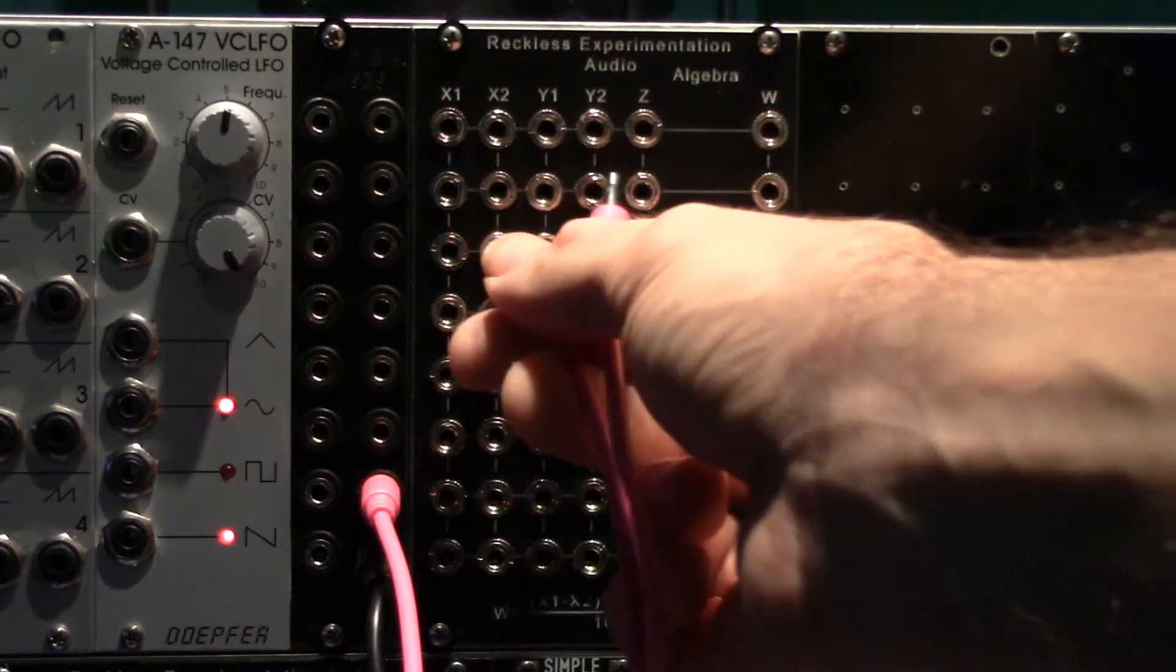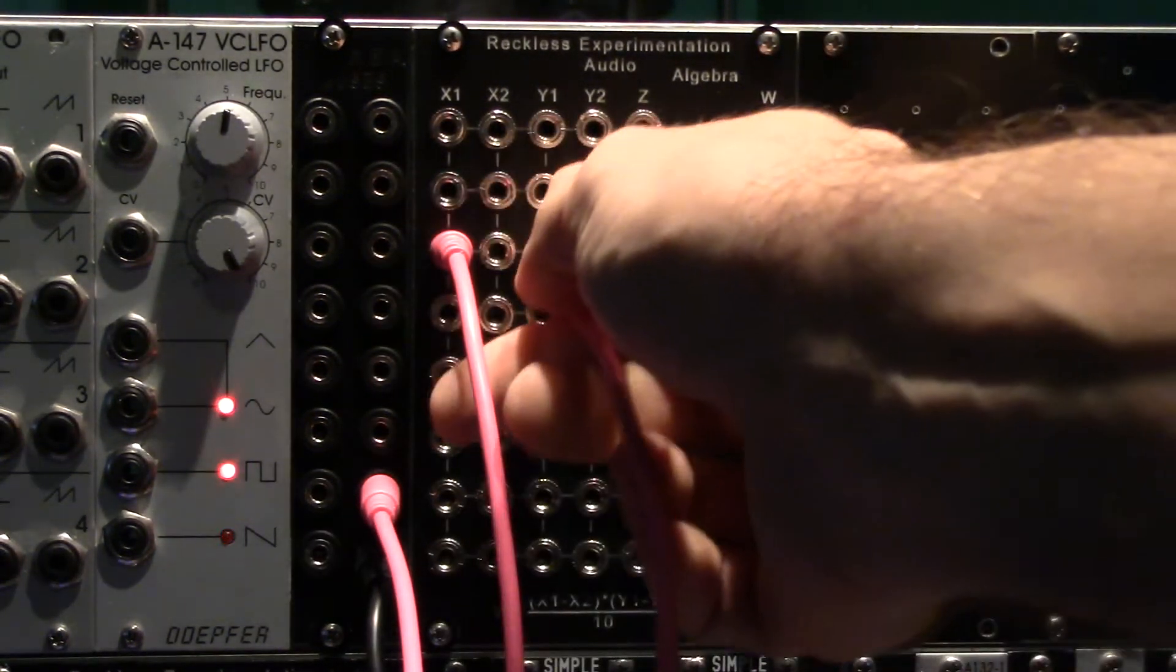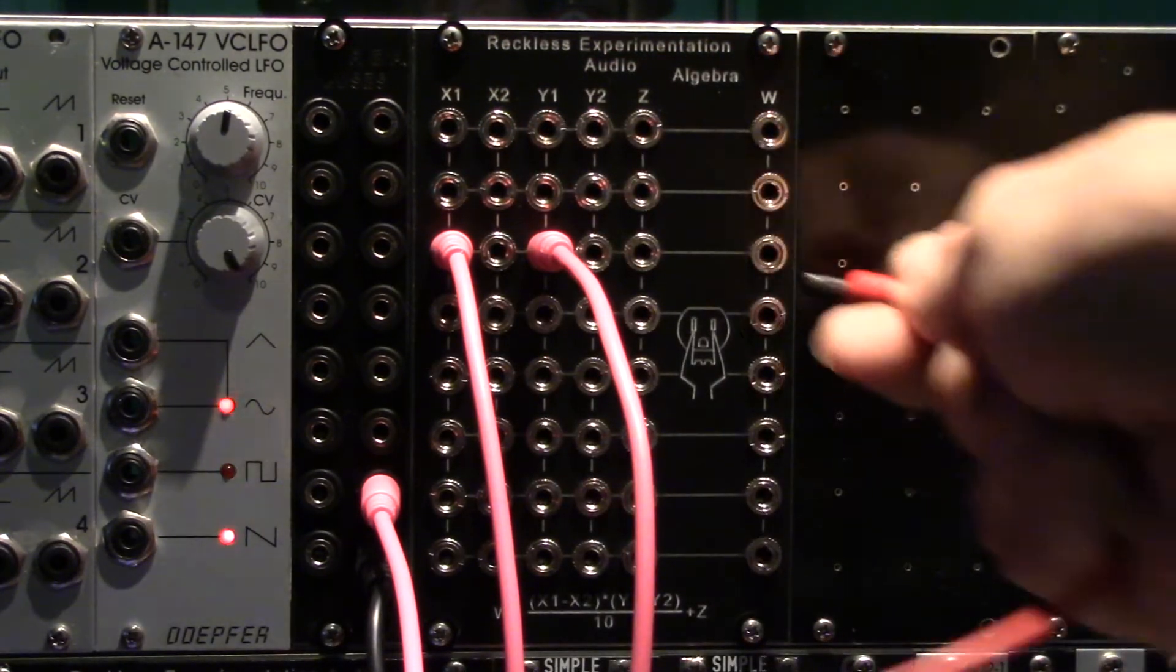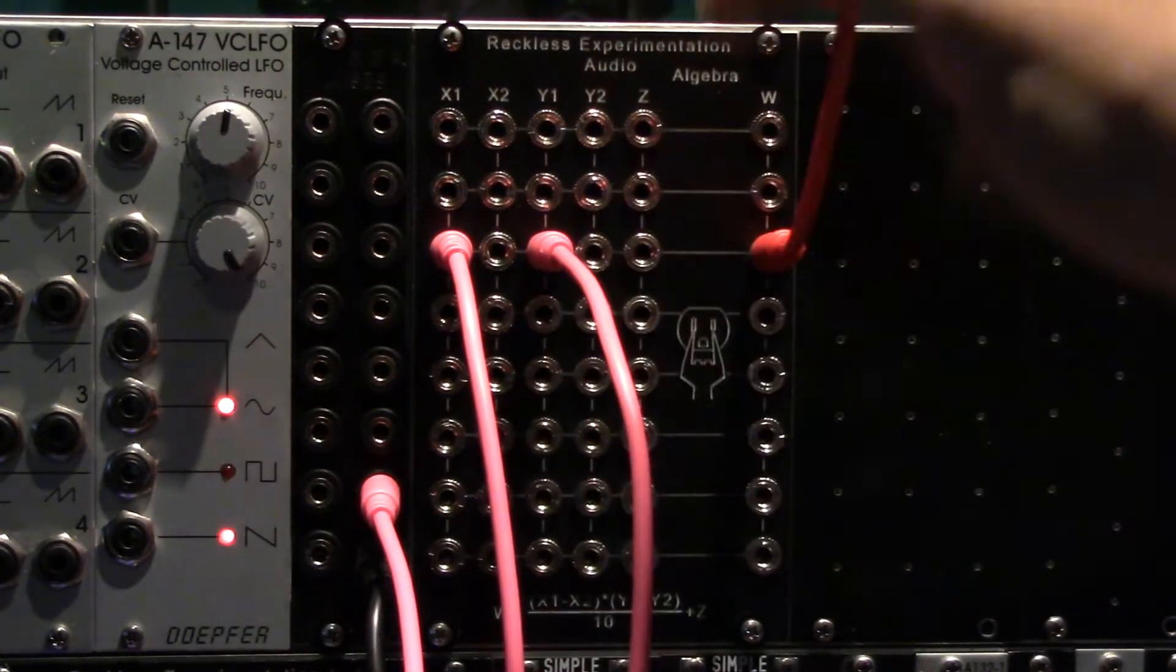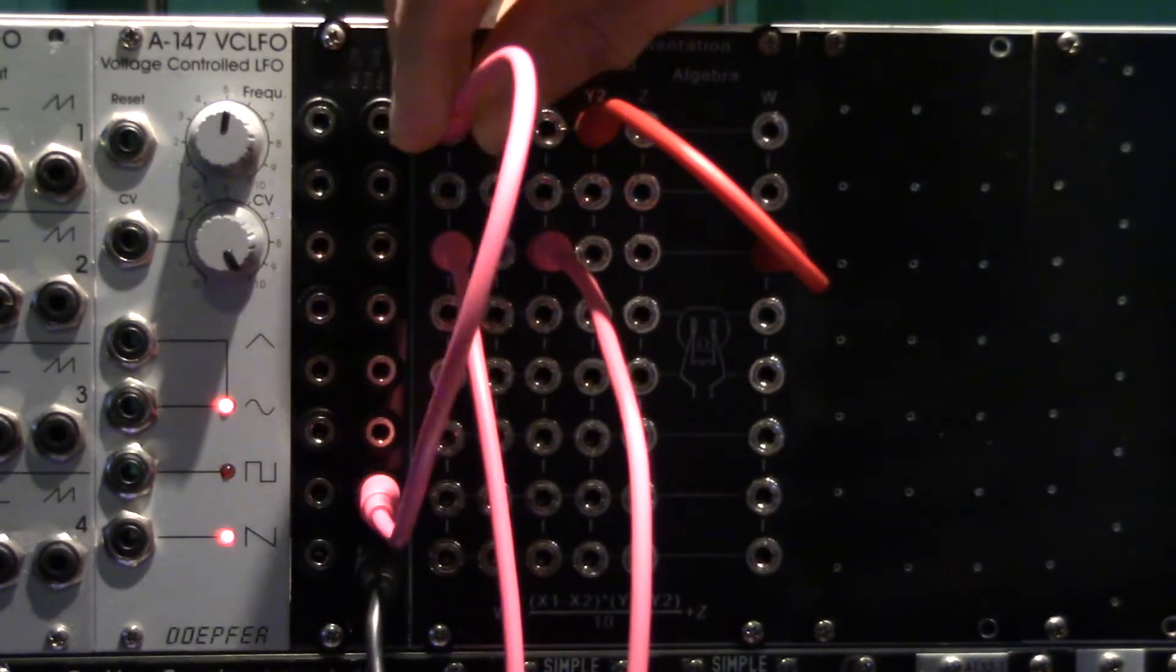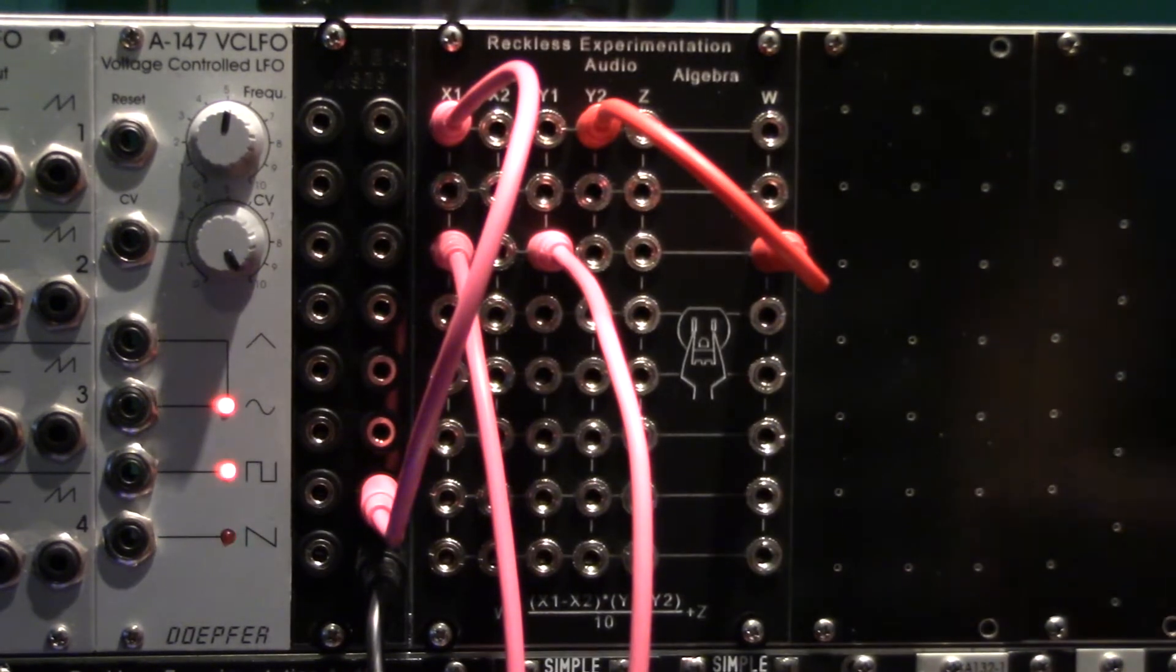Exponential amplification is also possible. This requires two channels. On the first channel, the envelope generator is connected to both the X1 and Y1 inputs. The output of this channel is now a square of the input value. Connect this to Y1 of another channel and connect the sound source to X1. You now have exponential gain.